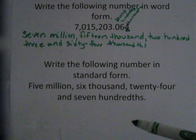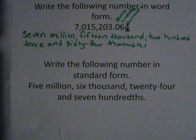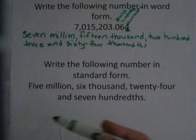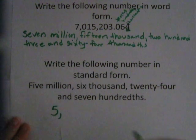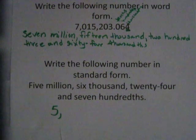Now, to write this number in standard form, this means in number form, using numbers. So we have five million, so five, comma,